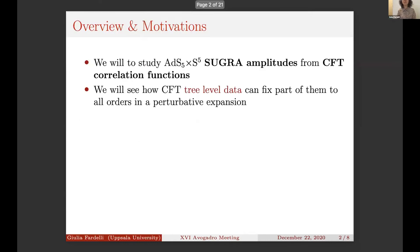Let me start with a brief overview. We are going to study AdS5×S5 super gravity amplitudes and their dual CFT correlation functions. In particular, we will try to understand the interplay between CFT tree-level data and part of the amplitude in an attempt to understand if it is possible to reconstruct amplitudes or part of them and correlators knowing just some piece of information.